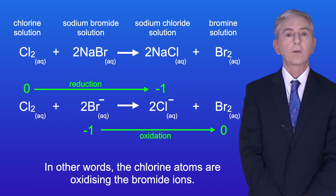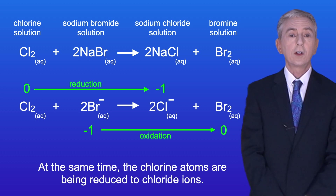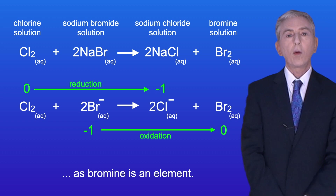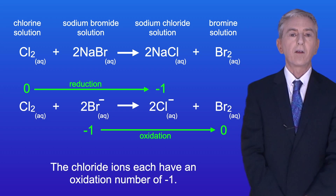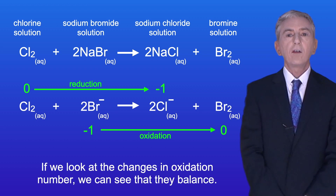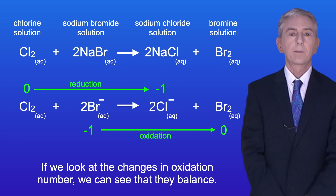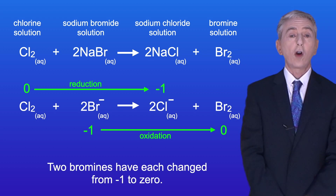In the reaction each chlorine atom removes one electron from a bromide ion - in other words the chlorine atoms are oxidizing the bromide ions. At the same time the chlorine atoms are being reduced to chloride ions. At the end the bromine atoms have an oxidation number of zero and the chloride ions each have an oxidation number of minus one. Looking at the changes in oxidation number we can see that they balance: two chlorines have each changed from zero to minus one and two bromines have each changed from minus one to zero.